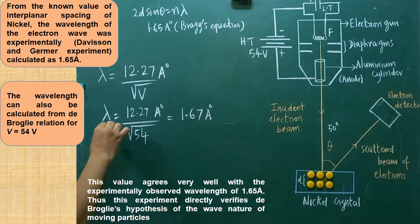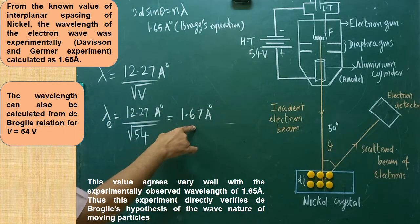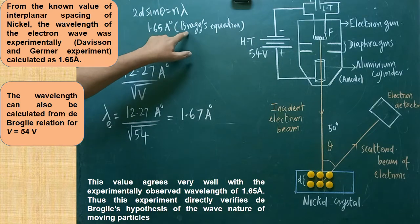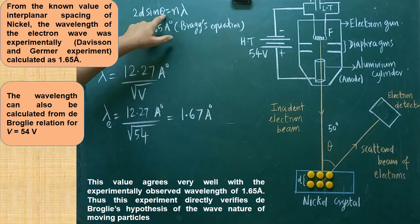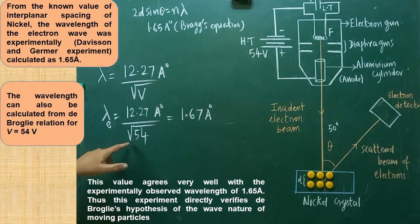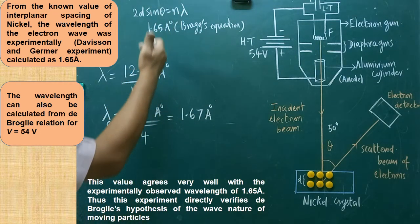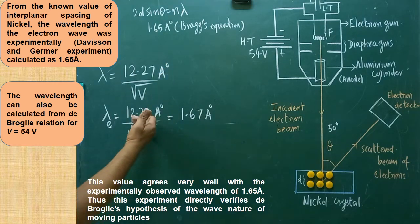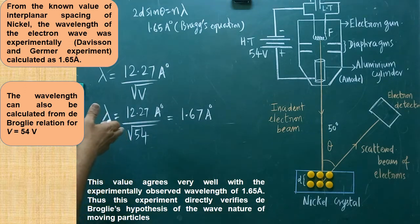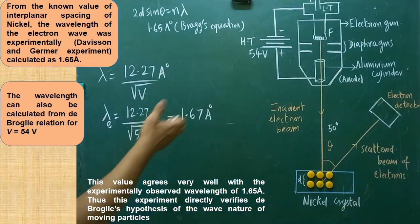This is the de Broglie wavelength of the electron obtained using the accelerating potential value. The value obtained from Bragg's equation is 1.65 Angstrom units, and the value obtained from this formula is 1.67 Angstrom units — both are almost the same. Therefore, the de Broglie wavelength of the matter wave, or electron wave, is confirmed by the Davison and Germer experiment.